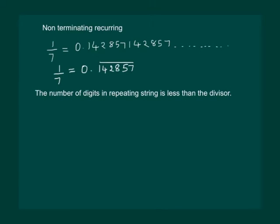Let us consider another number, say 7 by 8, and now let us divide it. We take the decimal up, and then 8 into 70 gives us 64, which will give us 6 as the remainder.